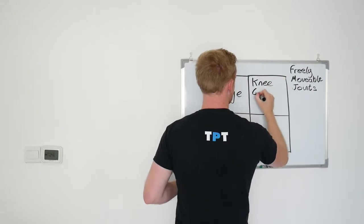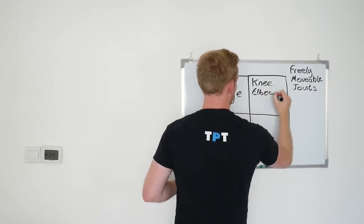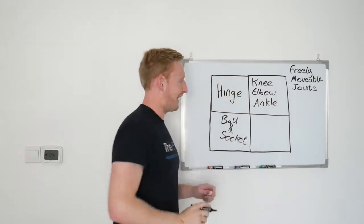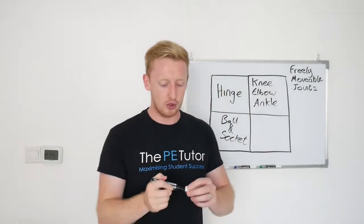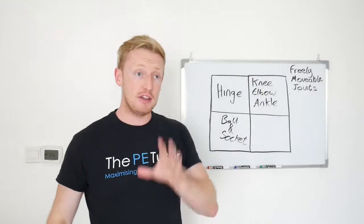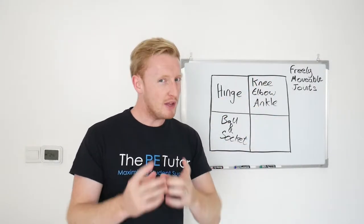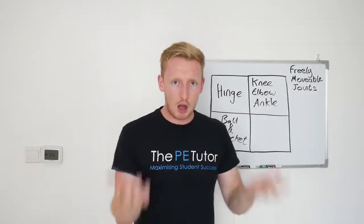Around our body we've got three examples: the knee joint, the elbow joint, and for your exam you're going to be classifying the ankle joint as a hinge joint as well. Because if you think about these three joints on your own body and what movements you can produce, there's only really two, which is up, down.